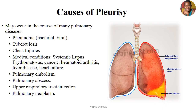Pleural effusion basically means accumulation of fluids in the pleural space due to inflammation that causes overproduction of mucus. As you can see here, this is an example of pleural effusion — it has accumulated in part of the lung and is present in this area.